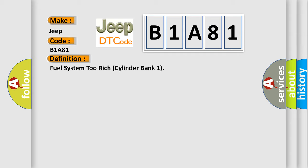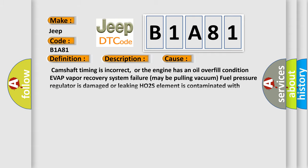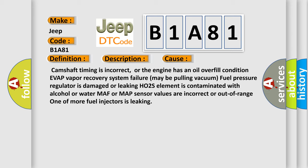Here is a short description of this DTC code: Key on or engine running, all electrical components off and coolant temperature at least 80 degrees Celsius, and the DME detected the Bank 1 adaptive fuel control system reached its rich correction limit. A rich A/F condition exists. The fuel status is in a closed loop pattern, coolant temperature is greater than 7 degrees Celsius, and engine speed is less than 1400 RPM. This diagnostic error occurs most often in these cases: camshaft timing is incorrect, or the engine has an oil overfill condition; a EVAP vapor recovery system failure may be pulling vacuum; fuel pressure regulator is damaged or leaking; HO2S element is contaminated with alcohol or water; MAF or MAP sensor values are incorrect or out of range; one or more fuel injectors is leaking.